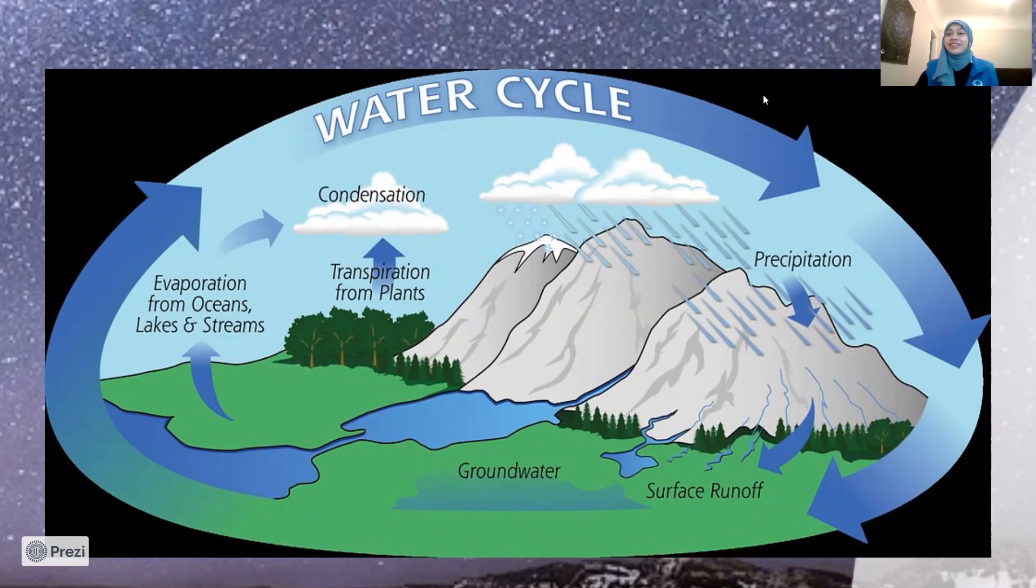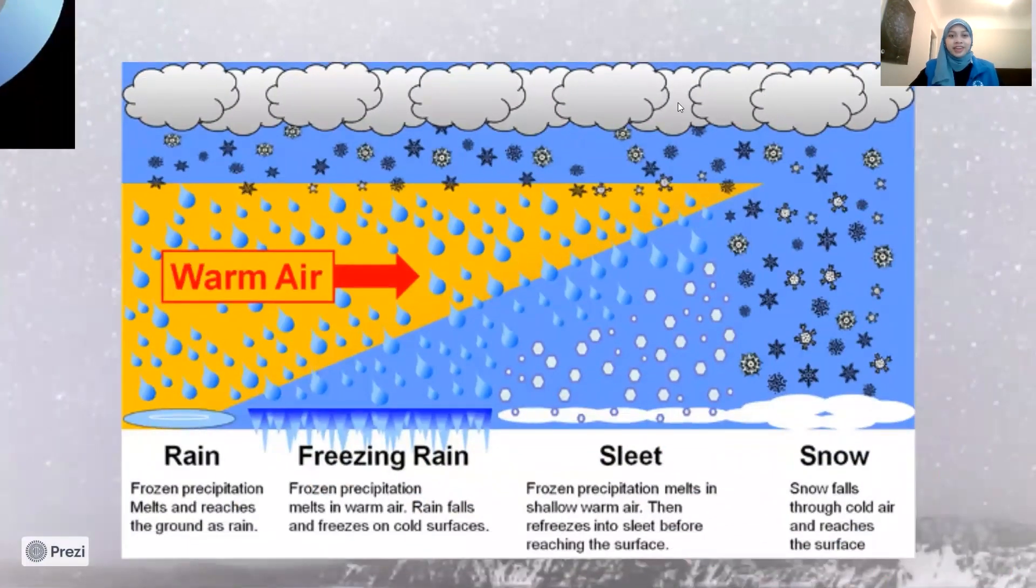Like we mentioned earlier, it all depends on the temperature. If the air is hot or warm, the condensation will melt and turn into rain. But if the air is cold, then the condensation will stay in its solid state, which is ice, so it snows instead.